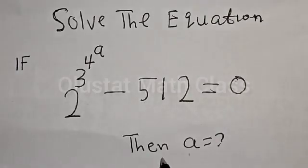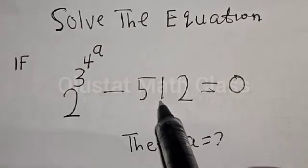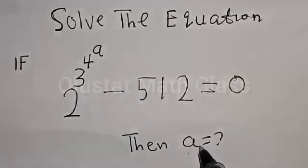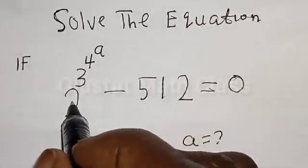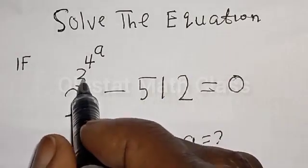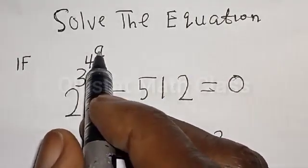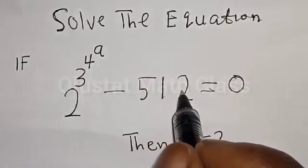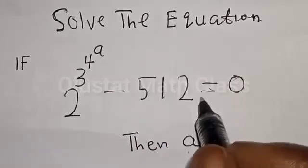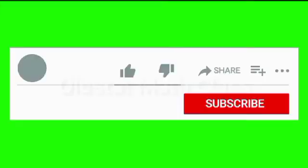Hi everyone, welcome to my class. In this class, we quickly want to find the value of a from the given equation: 2 raised to power 3 raised to power 4 raised to power a, minus 512, is equal to 0.